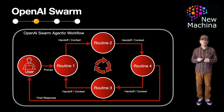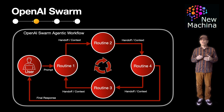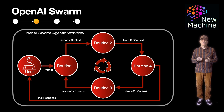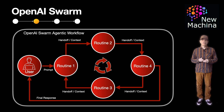So how does Swarm interact with the outside world? Well, like other agentic frameworks out there today, Swarm allows you to provide your agents with tools, such as APIs or access to databases, to help them do real-world tasks. This makes them more useful than just beyond chatting.